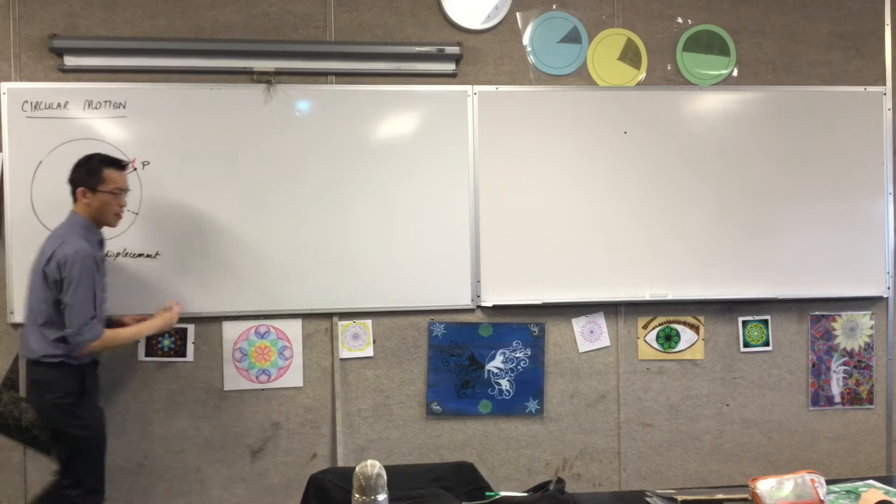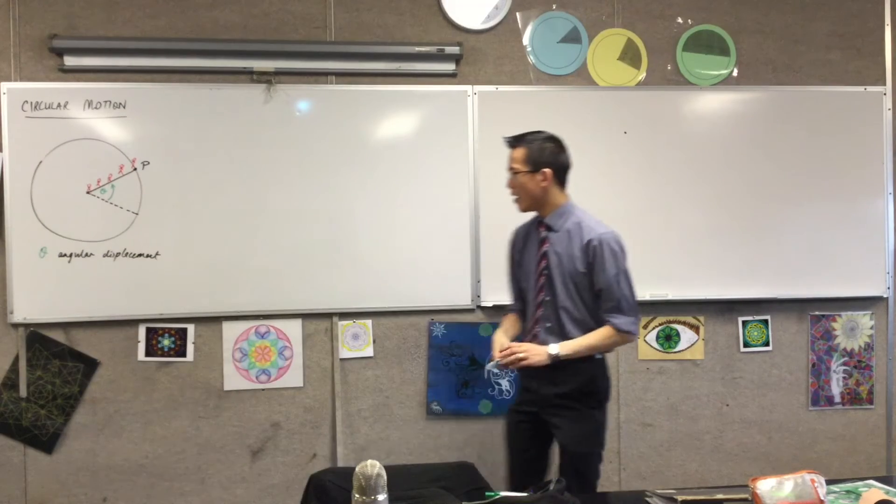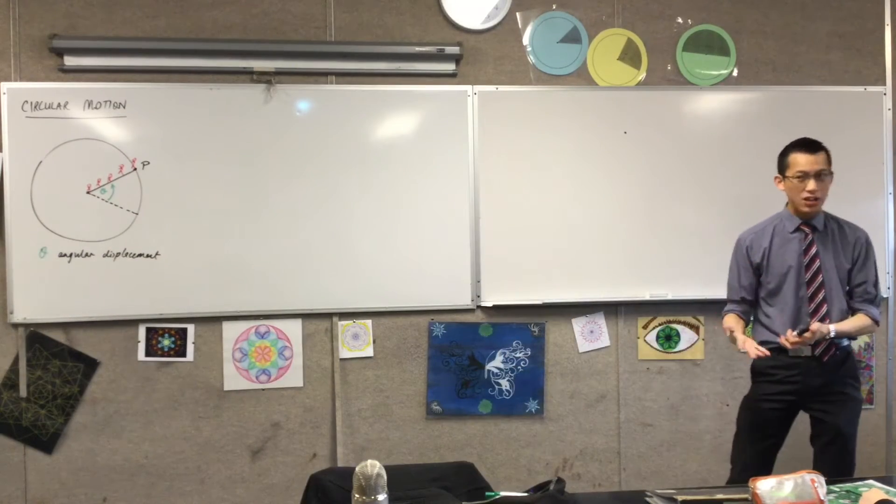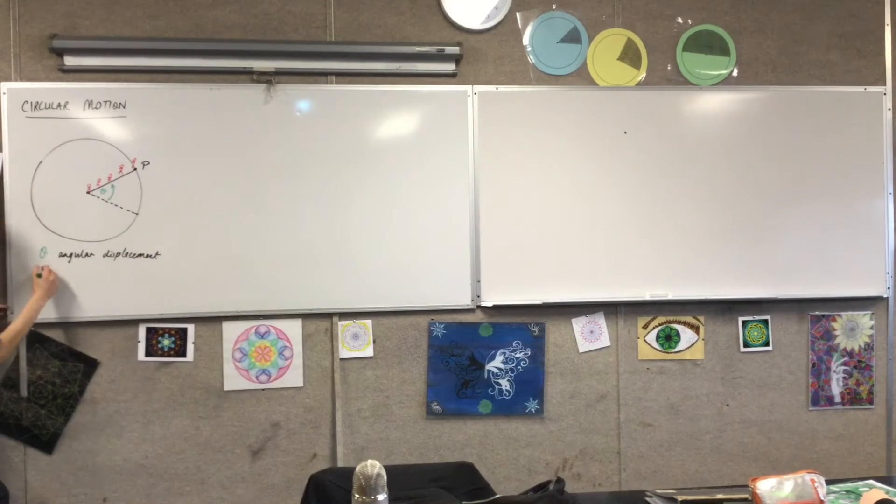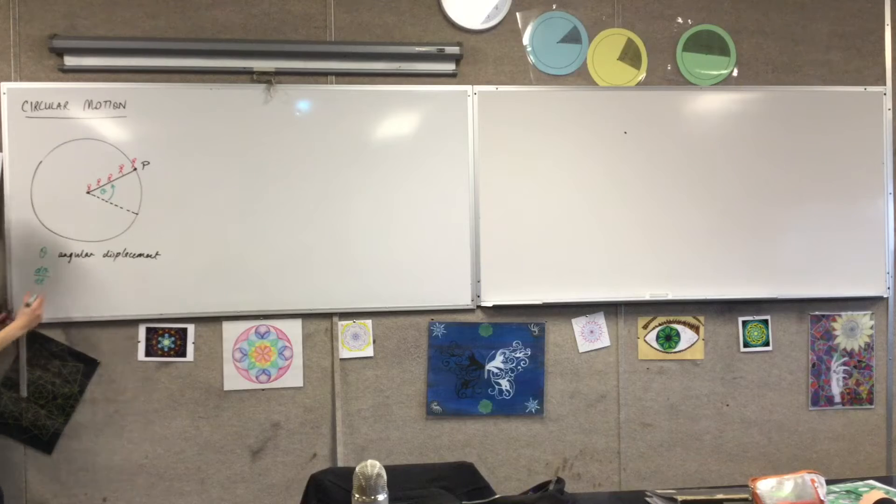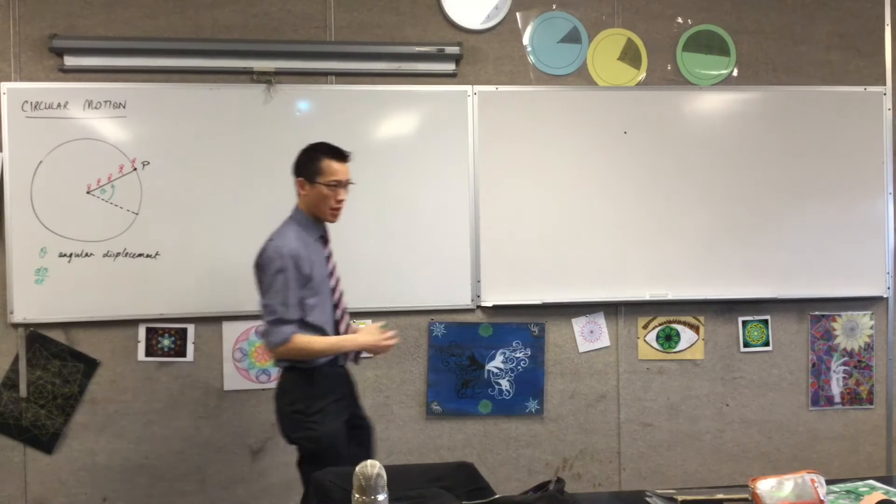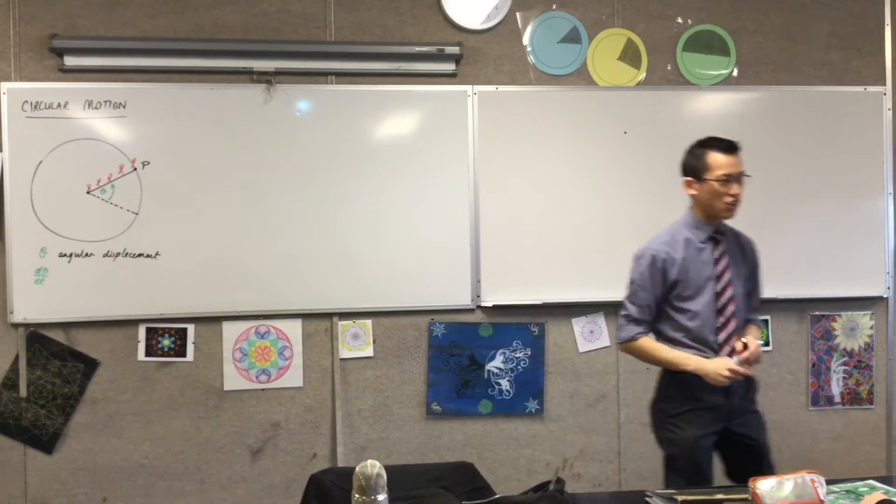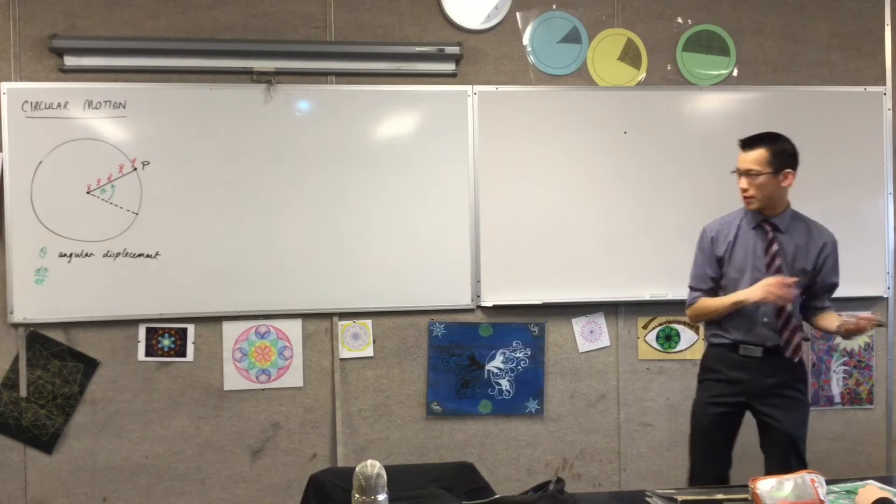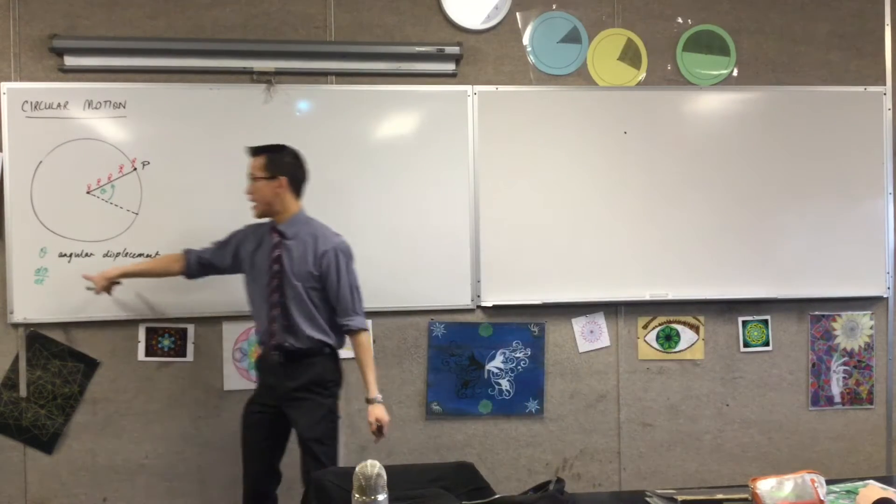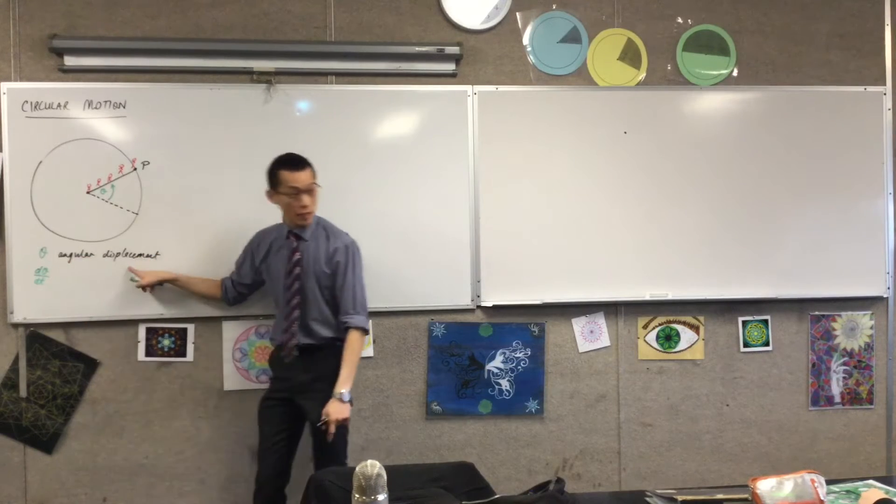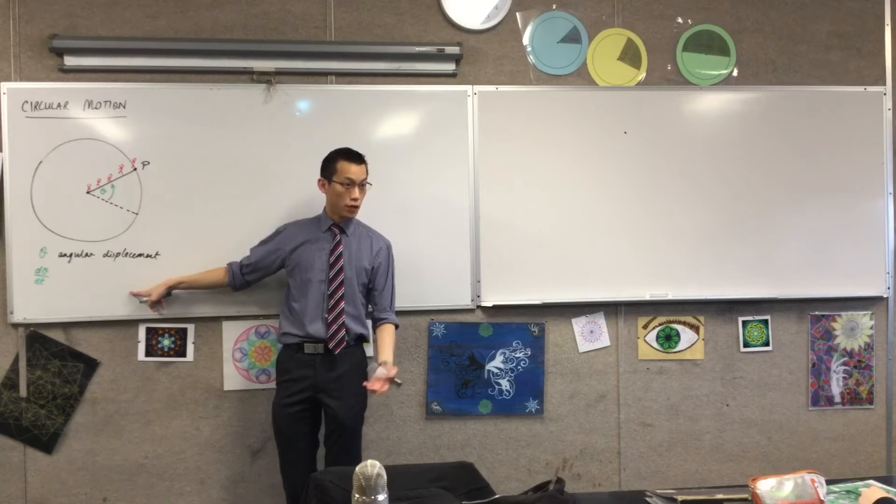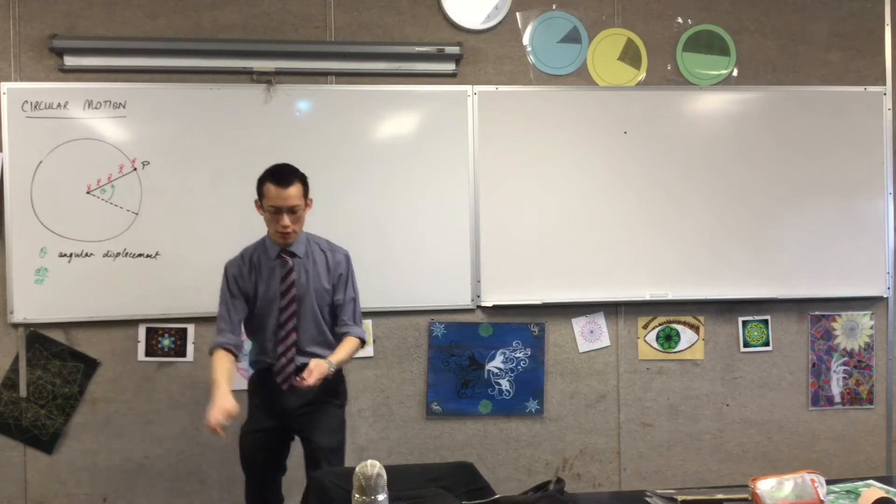And because we're thinking about motion, right, we want to think about how this changes over time. So, for instance, if I just differentiate with respect to time, how is the angular displacement changing as time progresses? What would be a natural name for this? Angular velocity. We went from displacement, if you differentiate, you should call that angular velocity. So this is angular velocity.